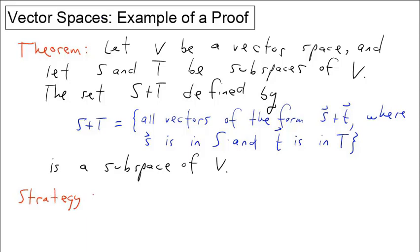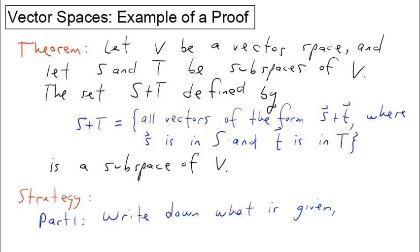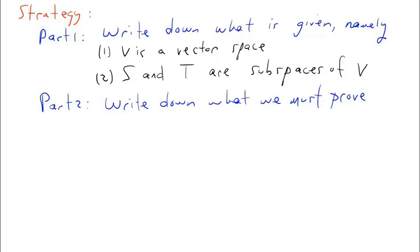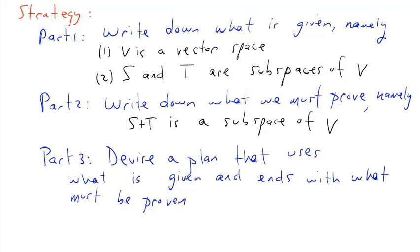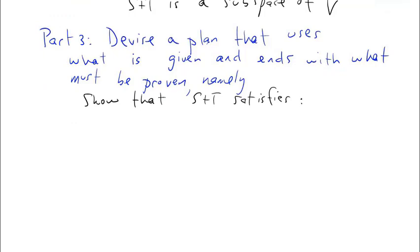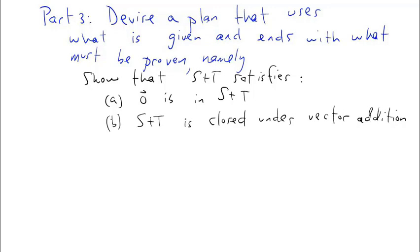Our strategy is the following. In part one, we write down everything that is given: V is a vector space, and S and T are subspaces of V. In part two, we write down what we must prove: specifically, that S plus T is a subspace of V. In part three, we devise a plan using what is given. We need to show that S plus T satisfies the three criteria: zero is in S plus T; S plus T is closed under vector addition; and S plus T is closed under multiplication by scalars.